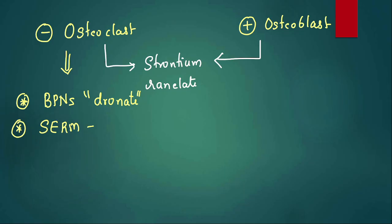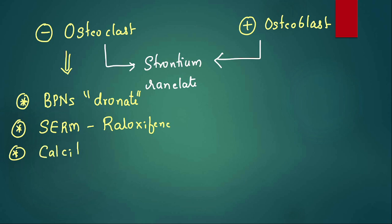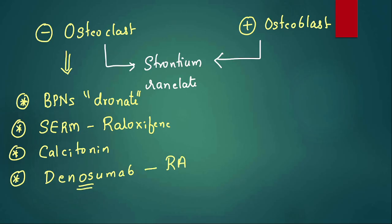Second, SERM — selective estrogen receptor modulator — the name is raloxifene. Then we have calcitonin, and then a monoclonal antibody called denosumab. Remember: denosumab targets RANK ligand — this is frequently tested.